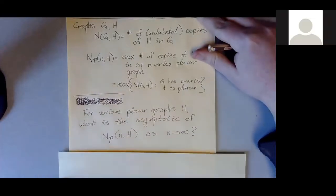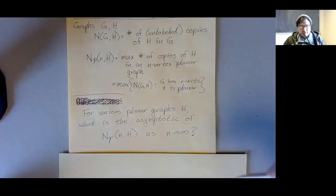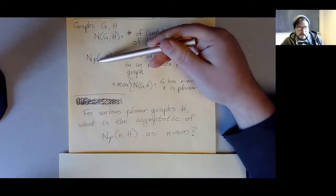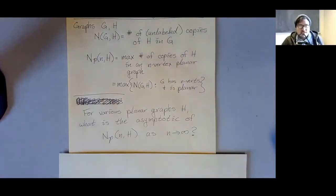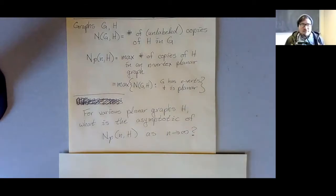I just want to know how many copies of H can possibly appear in a planar graph. If I were to replace P with the set of all graphs, that's a silly question because the correct answer is however many copies of H appear in a clique. So we should restrict the family of graphs that we're actually looking at.